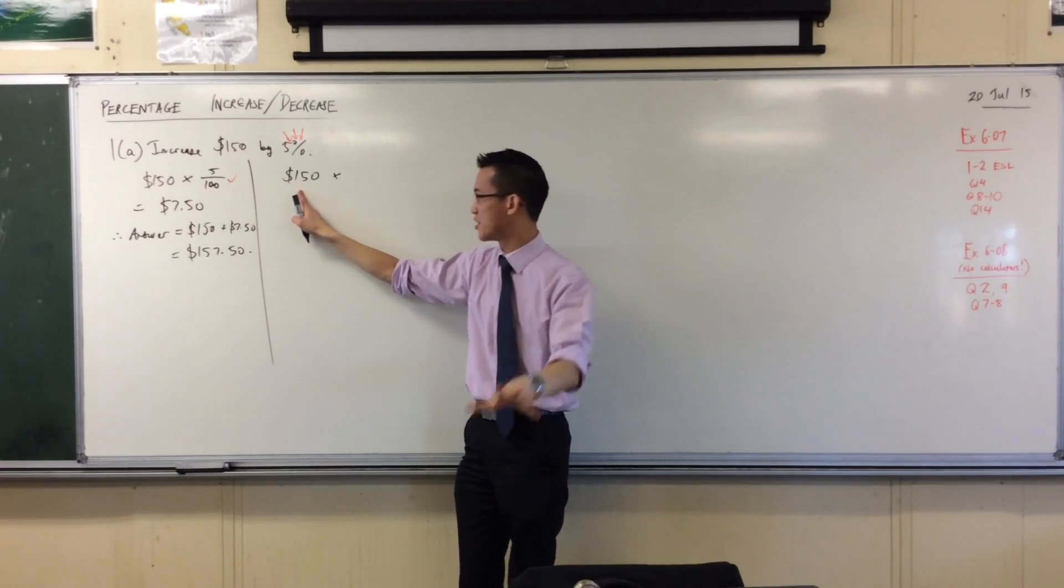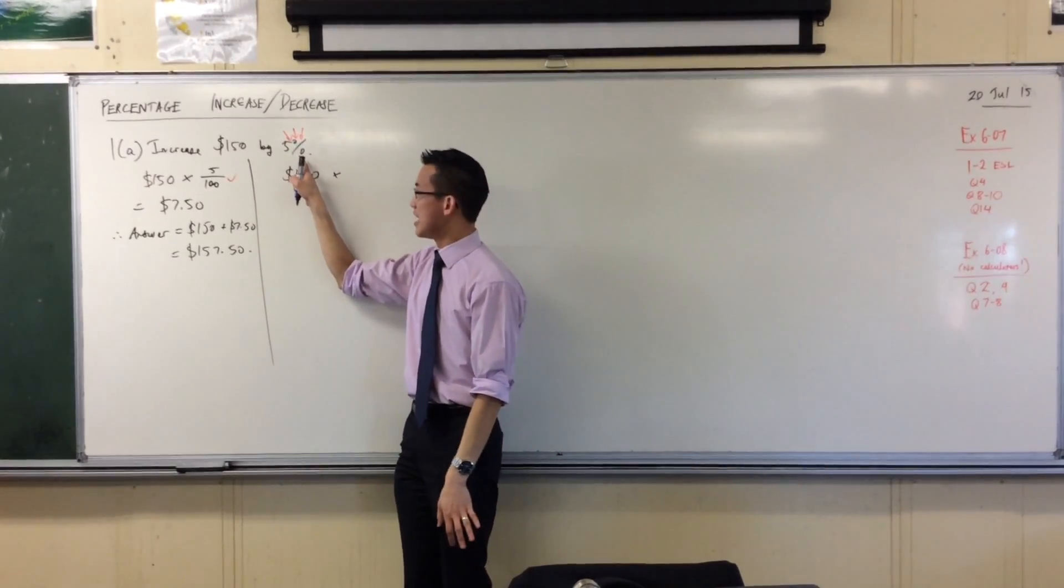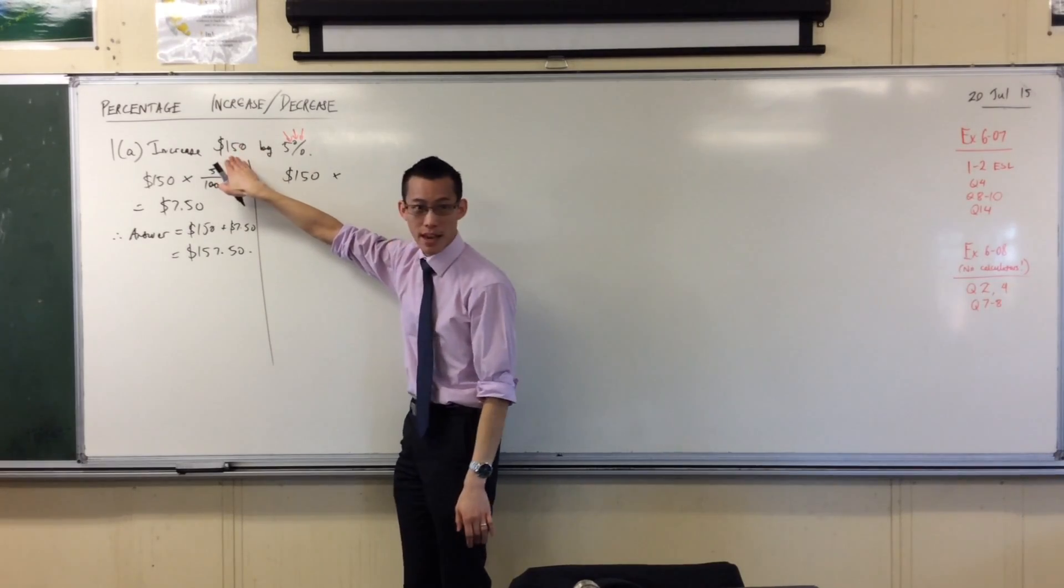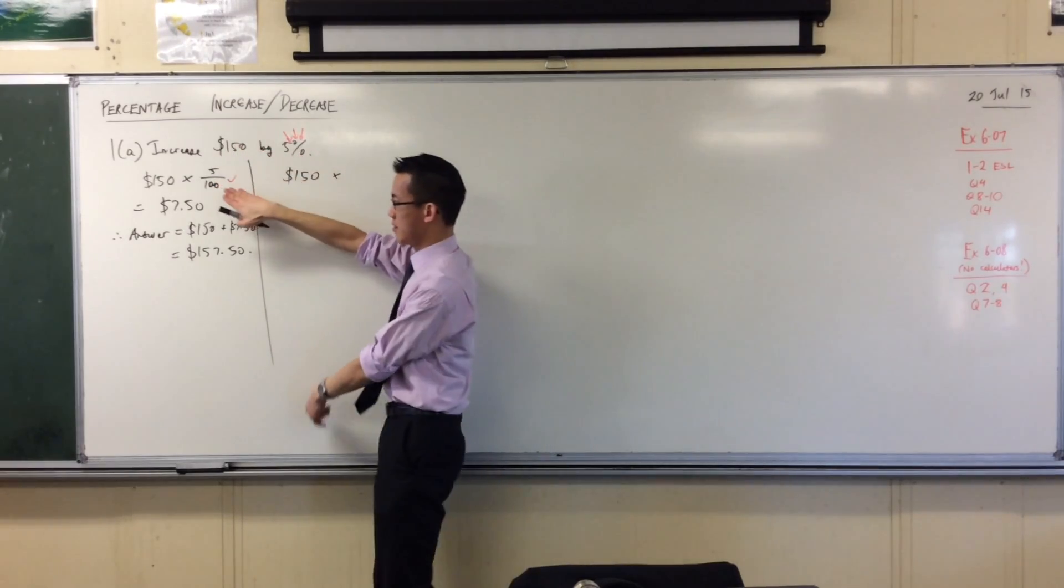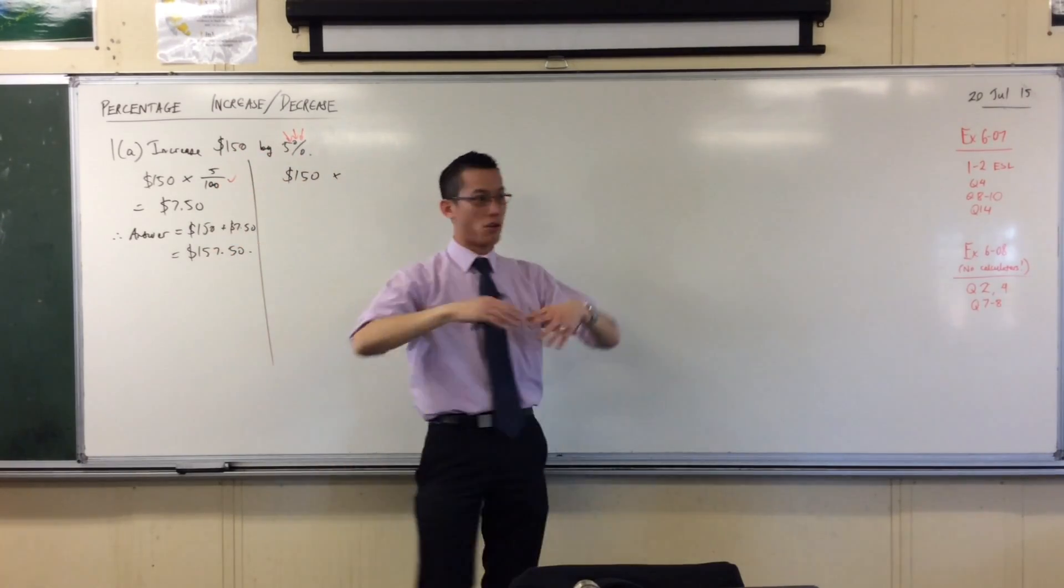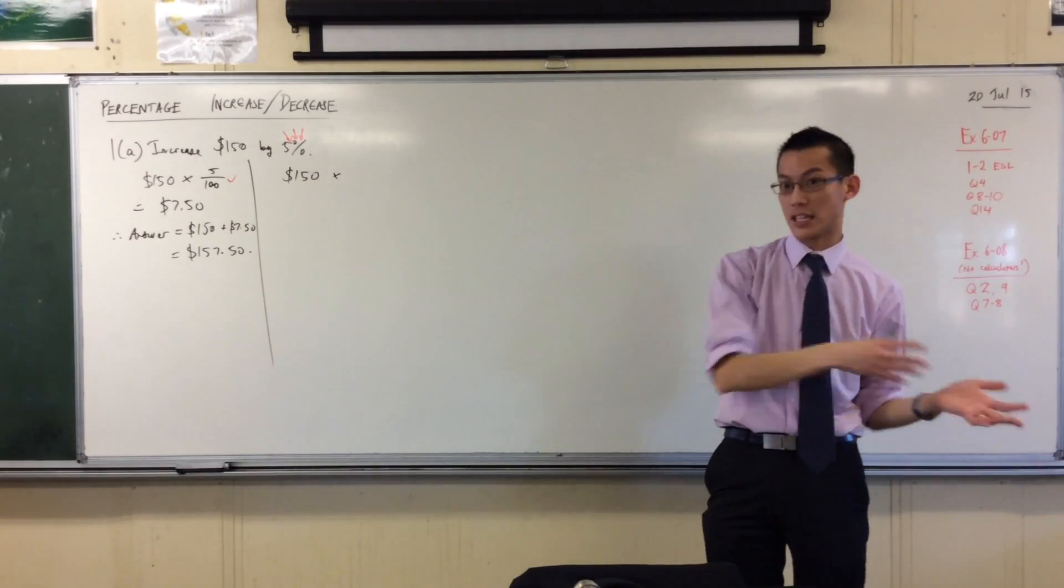Let me say that again in case you didn't catch it. Adding 5% is the same as saying, well, there's 100% and there's 5%. 100%, 5%. So altogether I've got 105%. Does that make sense?